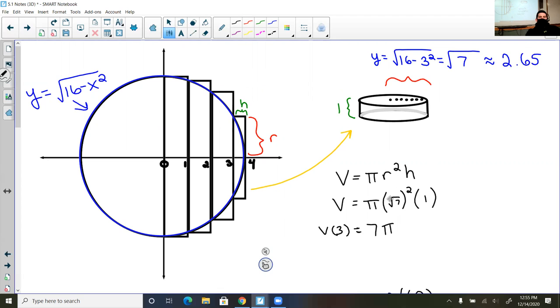Well, when I go to plug that in, I realize, since I'm squaring my radius, I'm not going to use the decimal. I'm going to use the radical, because pi times root 7 squared times the height of 1. Squaring the square root goes away. 7 times 1 is 7. So the volume, when I plug in 3, is 7 pi.